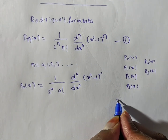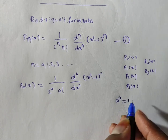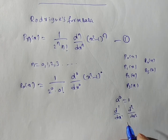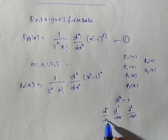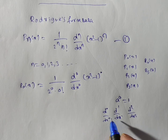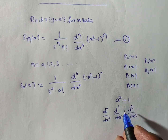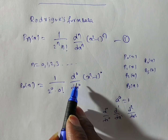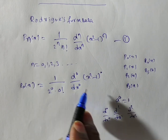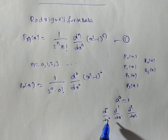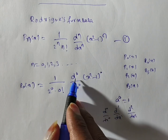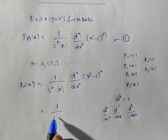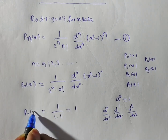Now, any non-zero constant to the power 0 is 1. Also, d to the power 0 by dx to the power 0 means zero times differentiation — no differentiation at all. d by dx means one time derivative, d squared by dx squared means two times derivative, and d to the power 0 means no differentiation, so the expression remains as is. Therefore (x squared minus 1) to the power 0 is 1. In the numerator we get 1. And 2 to the power 0 is 1, and 0 factorial is 1. Hence P0(x) is equal to 1.